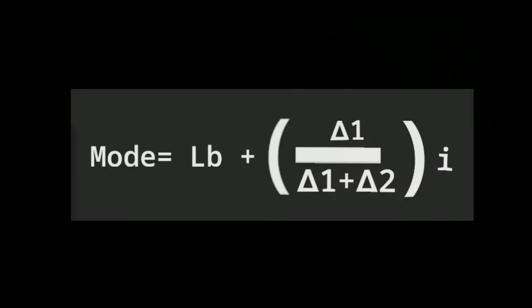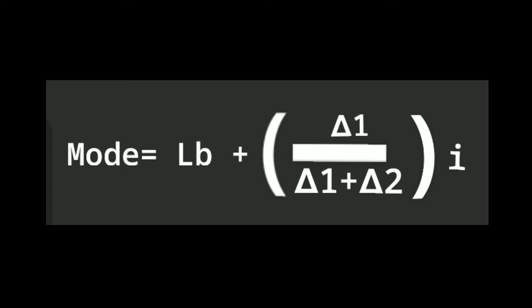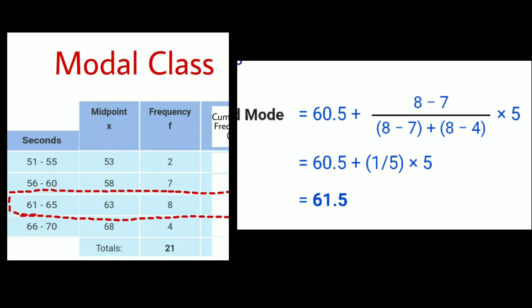So how to find the mode? We can say that the modal group is 61 to 65 because it has the highest frequency. We can find the mode using the formula: mode equals LB plus the quantity of delta 1 over delta 1 plus delta 2, multiplied by the interval. Where LB is the lower boundary of the modal class, delta 1 is the difference between the frequency of the modal class and the class preceding it, delta 2 is the difference between the frequency of the modal class and the class after it, and I is the class interval.